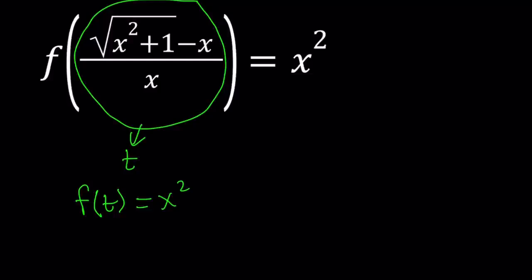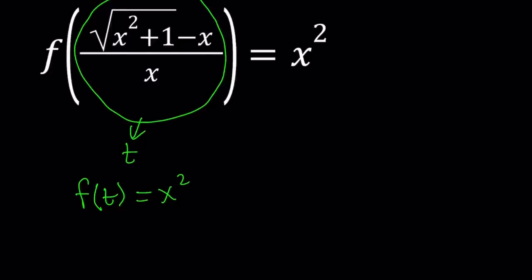But on the right hand side, we don't want x, we want t. So we want to be able to express this in terms of t, so that we can turn it into something in terms of x. Because the variable you use on both sides, as long as they're the same, it doesn't matter — they're just dummy variables.